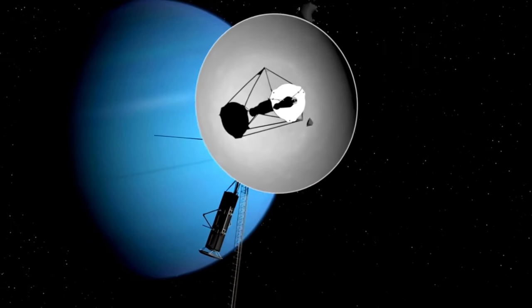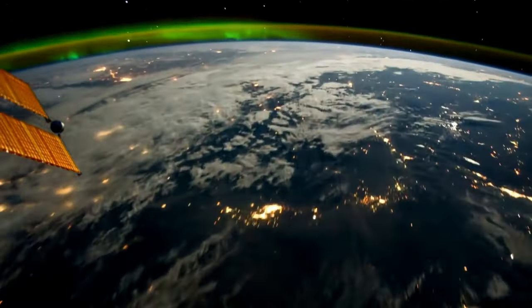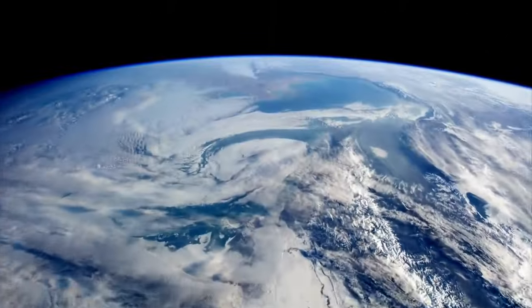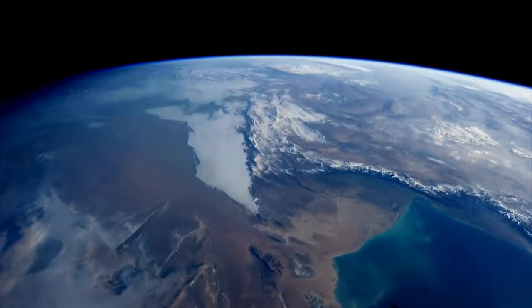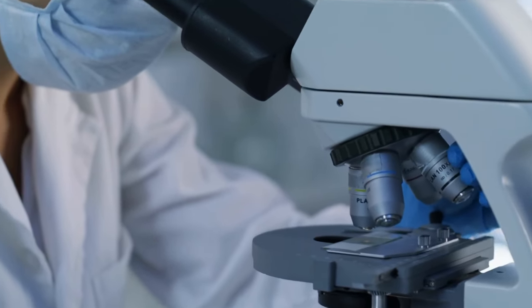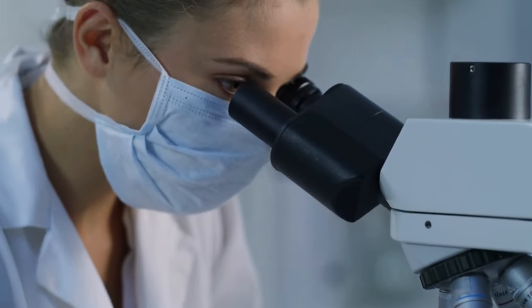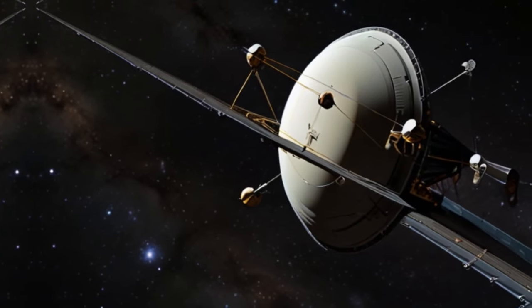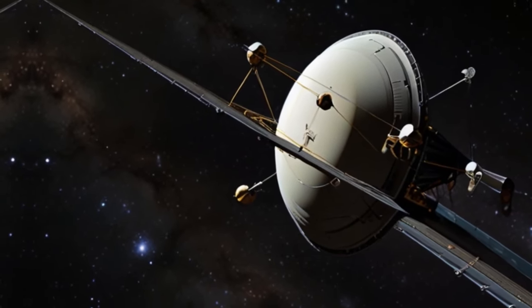Voyager 1 is currently billions of miles outside of it and moving at a rate of around a million miles per day. Now it has just established communication with a highly developed space object. What could this be exactly? Voyager just made contact with an unknown object in space.